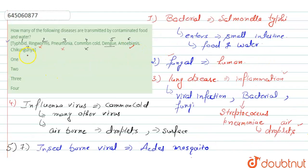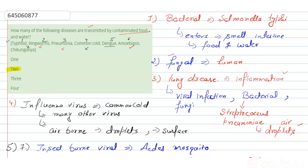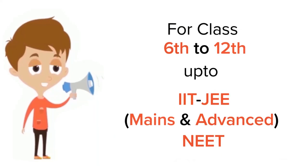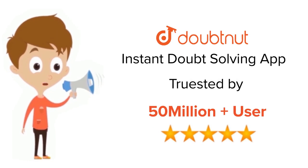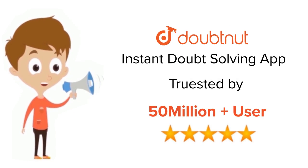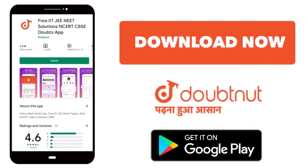On the basis of this discussion, we conclude that only two diseases — typhoid and amoebiasis — are spread or transmitted by contaminated food and water. So the right answer for our question is two. For class 6–12, IIT JEE, and NEET level, trusted by more than 5 crore students — download DoubtNet today.